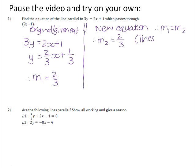Because we were told that the lines are parallel, the new equation will have the form y equals mx plus c. We know the gradient will be 2 thirds. We don't know what the y-intercept will be, so we need to use the coordinate of the point that they gave us.